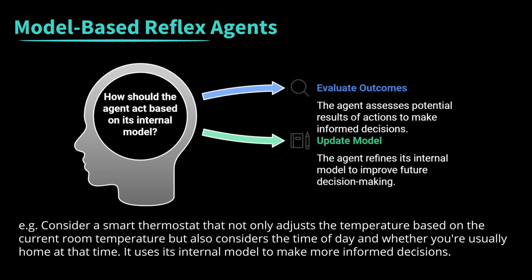Next, we have model-based reflex agents. Model-based agents are a step up from simple reflex agents — they don't just react, they think a little more before acting. These agents build an internal model of the world based on the data they perceive, which helps them evaluate possible outcomes and consequences before making a decision. Consider a smart thermostat that not only adjusts temperature based on the current room temperature, but also considers the time of day and whether you are usually home at that time. Use cases include smart home security systems that differentiate between regular household activity and potential security threats.